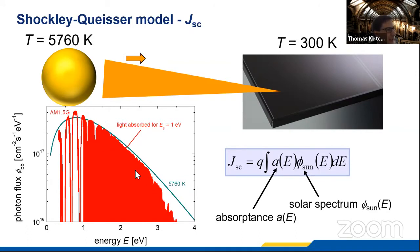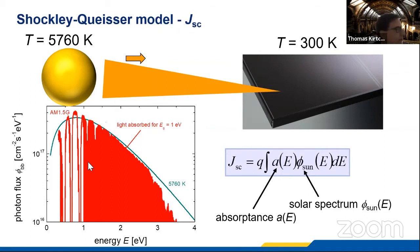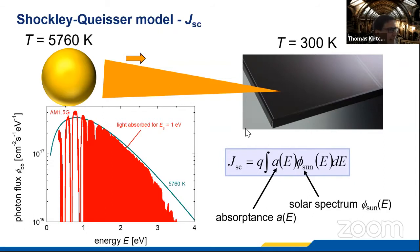You also lose a little bit because the atmosphere absorbs some photons, giving you the red curve. If we then say we have a semiconductor with a band gap of, say, one electron volt, then ideally the solar cell absorbs all photons from one electron volt onwards — the red area. If you integrate that area and multiply by the elementary charge, that gives you the maximum possible photo current. This is the straightforward part of the detailed balance model.